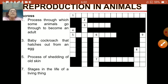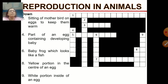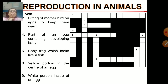Now let us see the downward clues. Number 2: sitting of a mother bird on eggs to keep them warm. Number 4: part of an egg containing the developing baby. Number 6: baby frog which looks like a fish. Number 8: yellow portion in the center of an egg. And the last one: white portion inside of an egg.